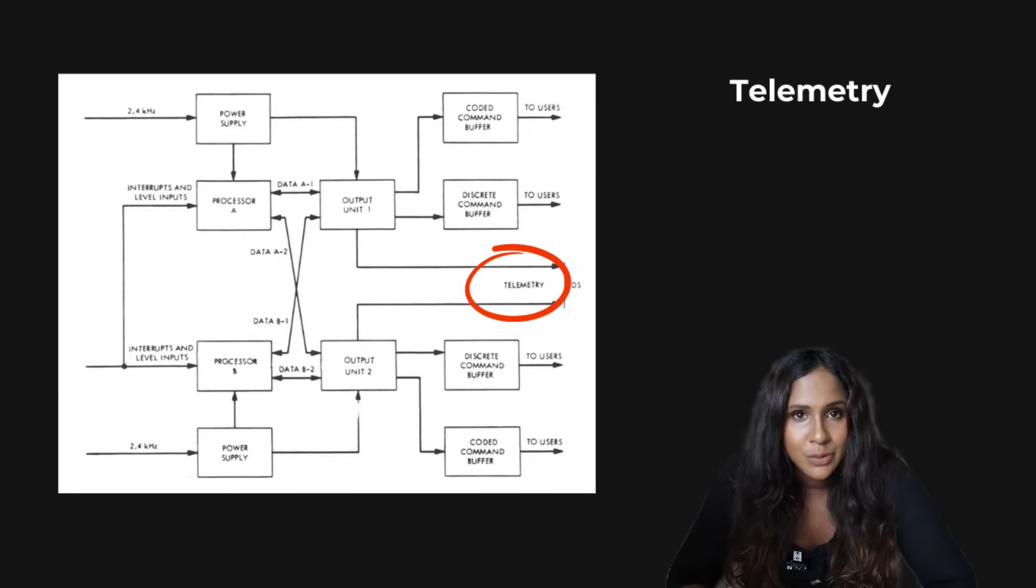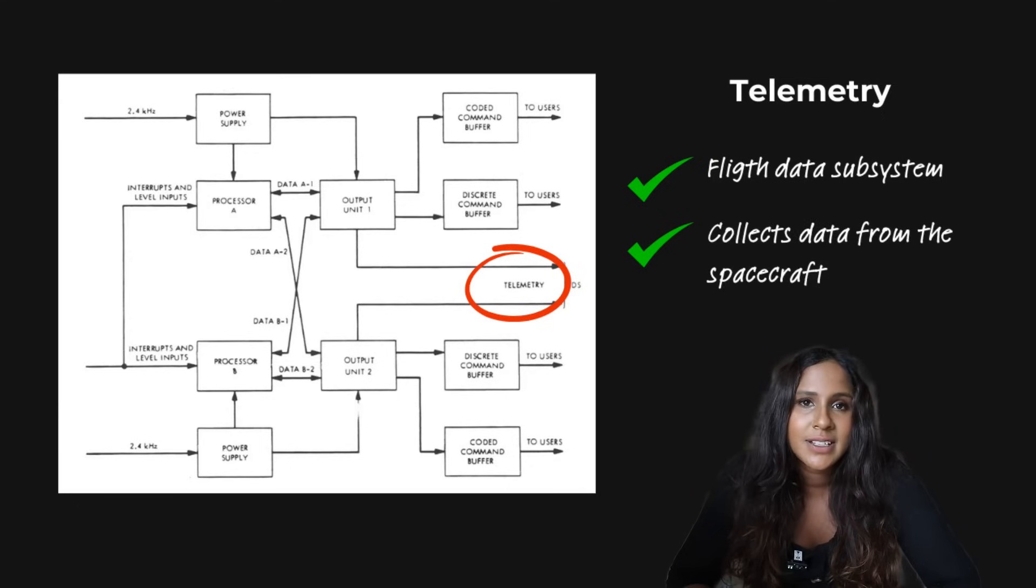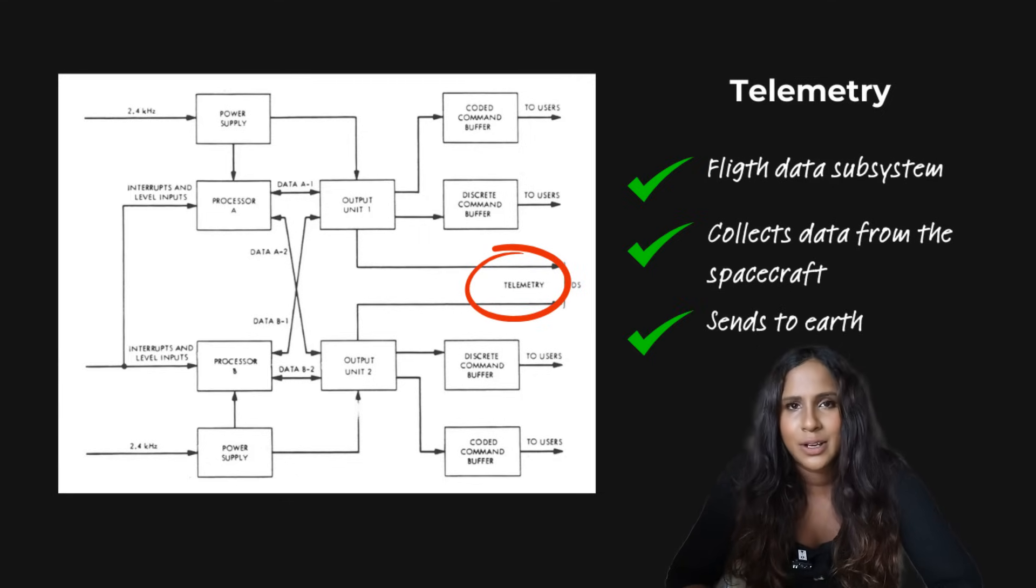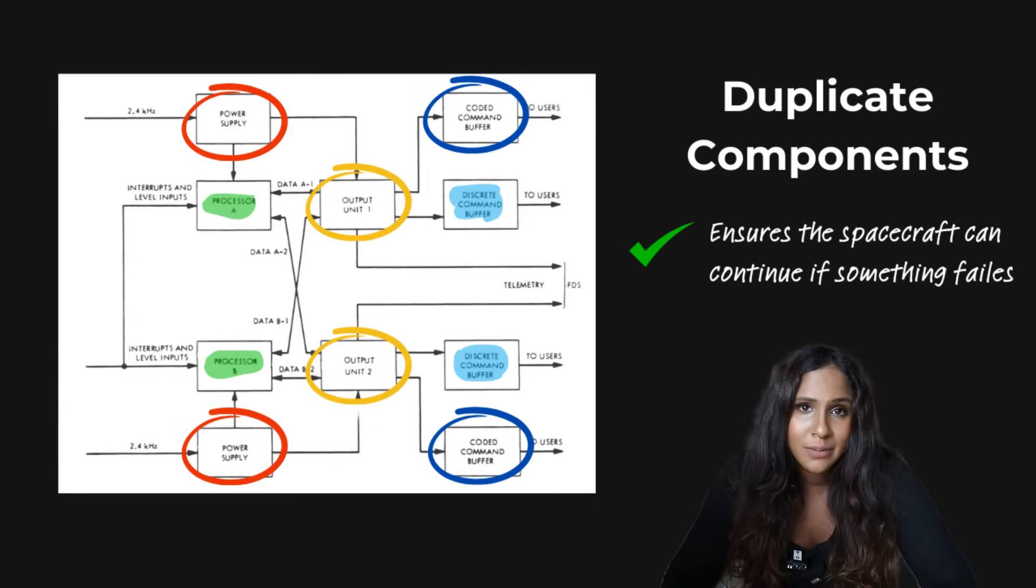You have the telemetry, which is part of the flight data subsystem. And the telemetry just collects data from the actual spacecraft. This can include the health status, various scientific measurements, and just sends it back to Earth via radio signals. Again, you'll notice that almost every component in the system is duplicated. Two processors, two output units, two power supplies. This just ensures that the spacecraft can continue to run if something fails.